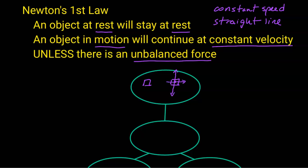I know these are balanced because the arrows on the other side are the same length. When the forces are balanced or there's no forces, an object that is at rest will stay at rest. An object in motion will continue at constant velocity.